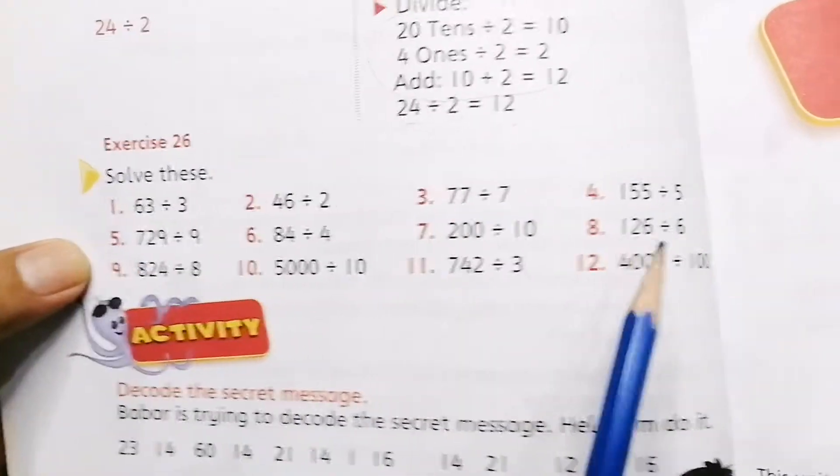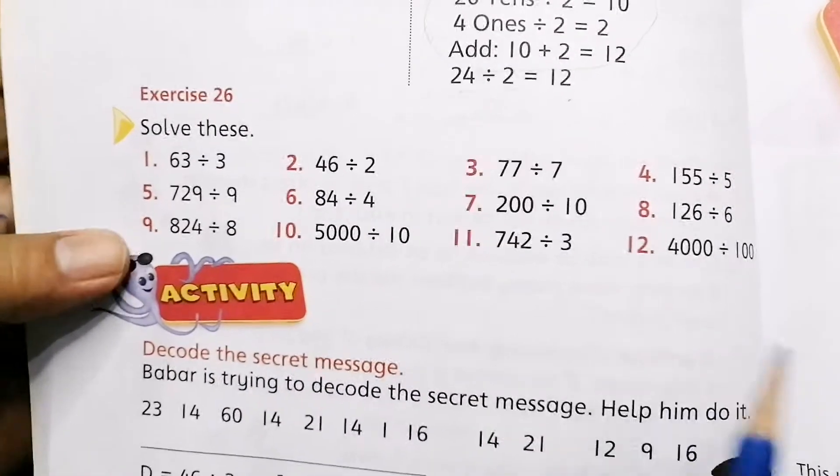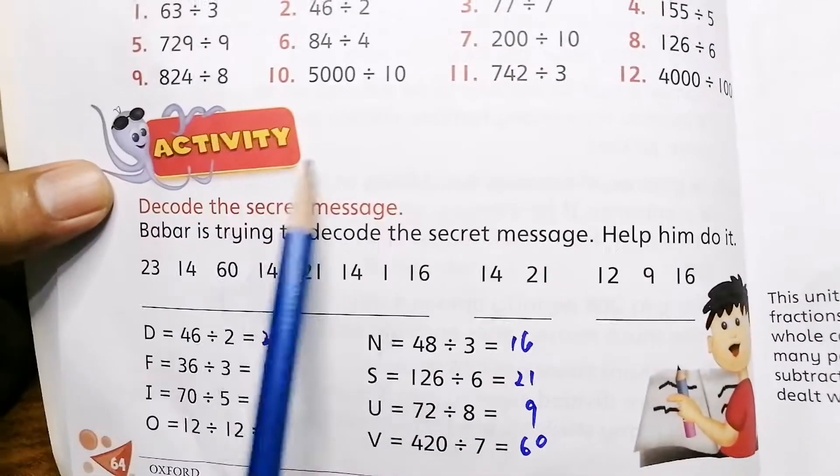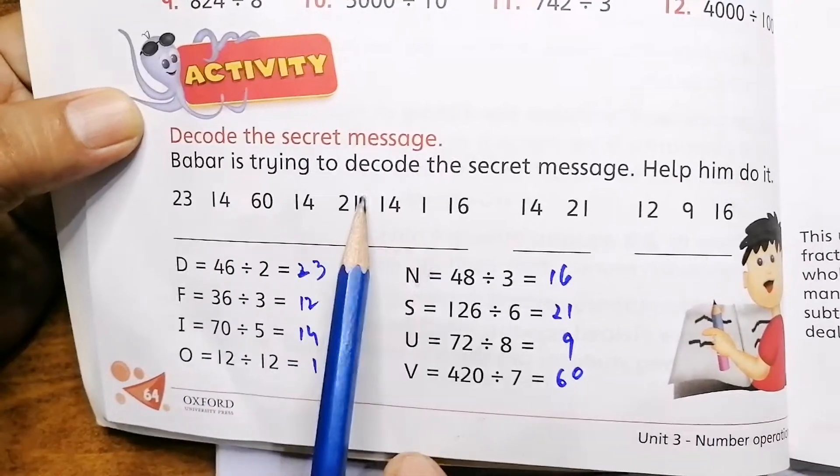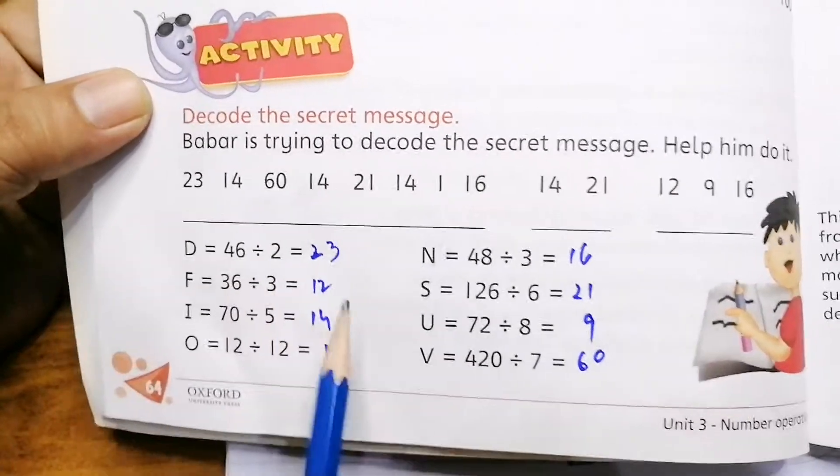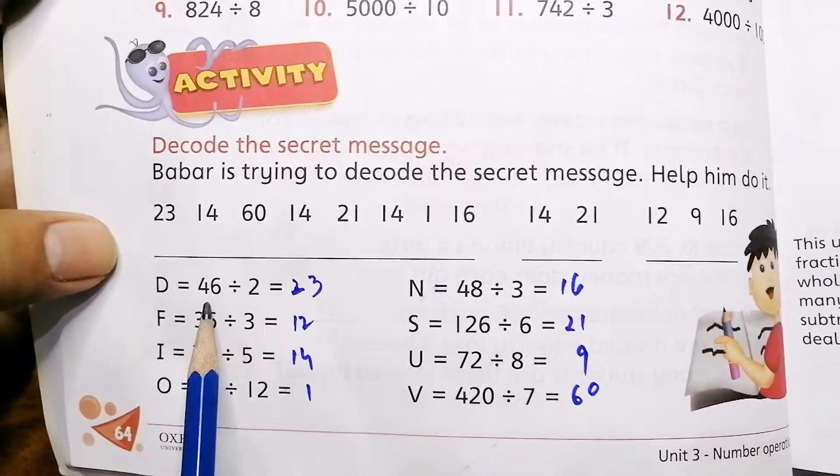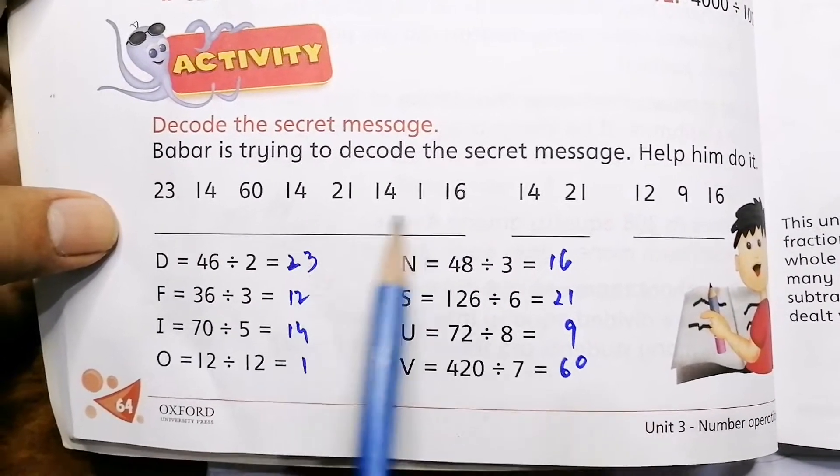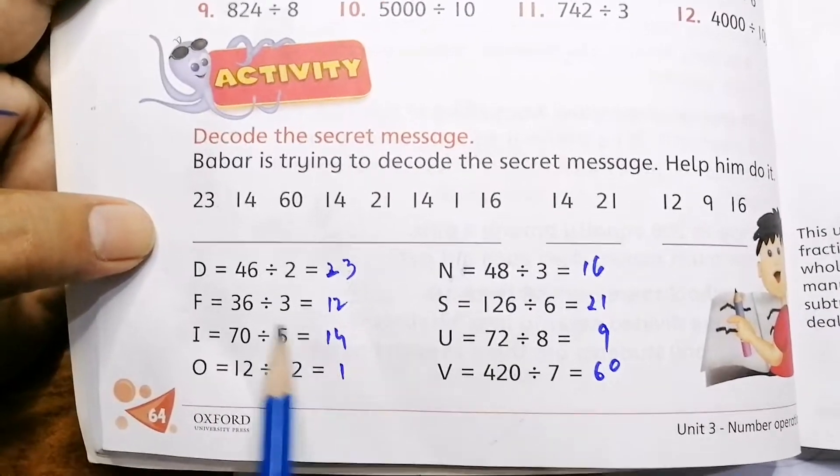This exercise 26 is about division. You can simply divide and get the answer. In the end, an activity is given: decode the secret message. Babar is trying to decode the secret message. First of all, we divide this and we see that 46 divided by 2 is 23, and so on. From this secret message, you can pick up the correct answers.